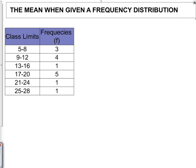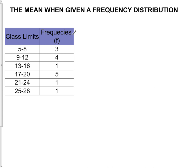The formula that we're going to use involves a couple of things. It involves the frequencies, which is perfect because what we have is a frequency distribution. Here are the frequencies right here — your frequencies are in this column. The frequencies in the formula are going to be called F. When I refer to F in the formula itself, I'll be referring to the frequencies.